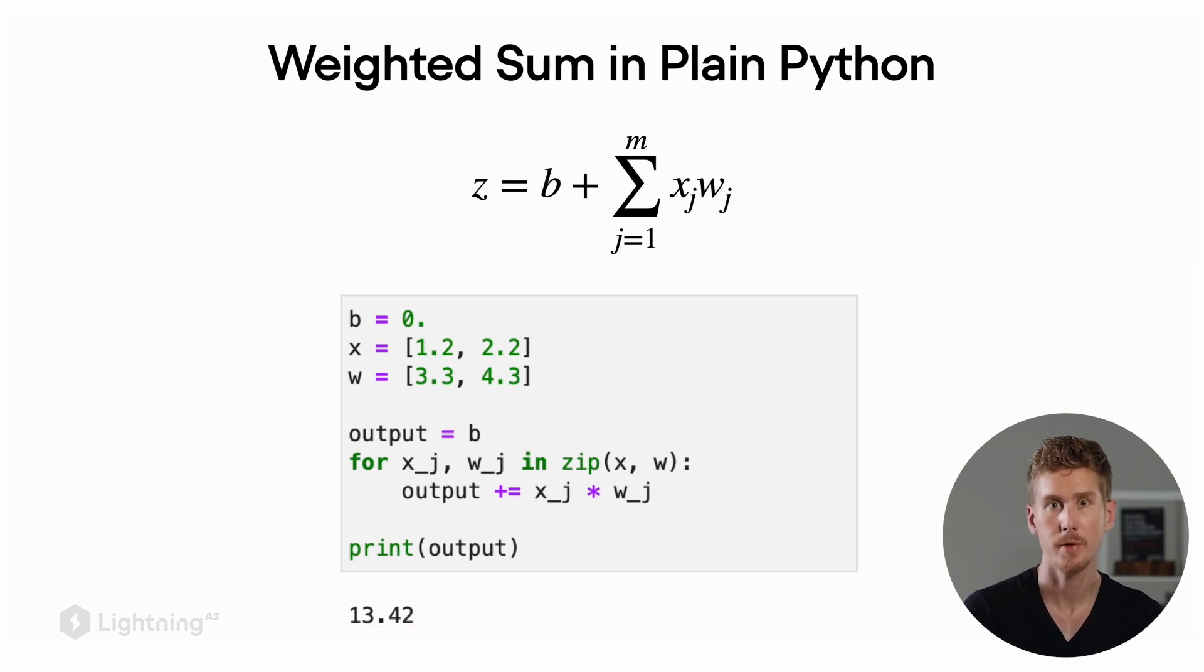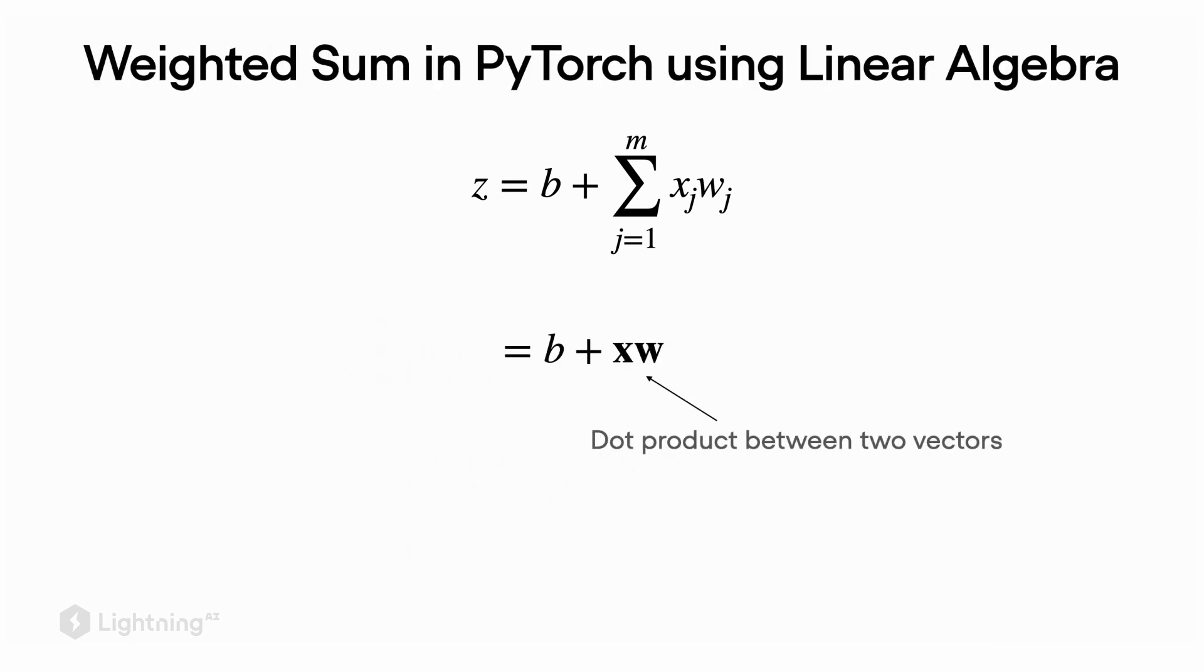If we ignore the bias unit for a moment and just look at the x and w values, we can actually express the weighted sum as a dot product between x and w. So if x and w are vectors, we can use a concept from linear algebra which is called the dot product to compute this weighted sum.